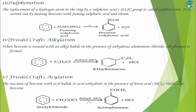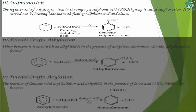Next is sulfonation. In sulfonation, the hydrogen atom is removed and an SO₃H (sulfonic acid) group is added. This is carried out by heating benzene with fuming sulfuric acid and oleum. Fuming sulfuric acid is H₂SO₄ plus SO₃. The final product is benzene sulfonic acid.